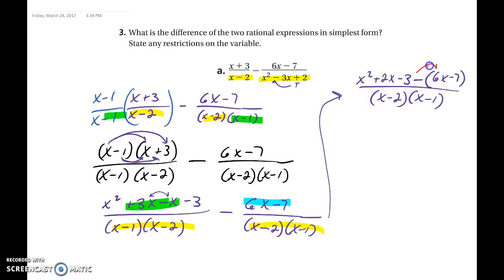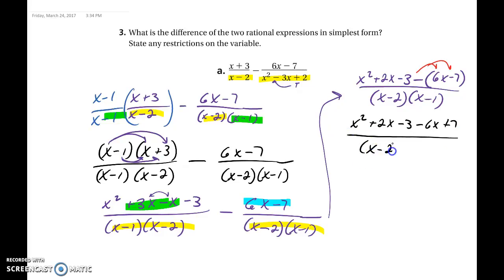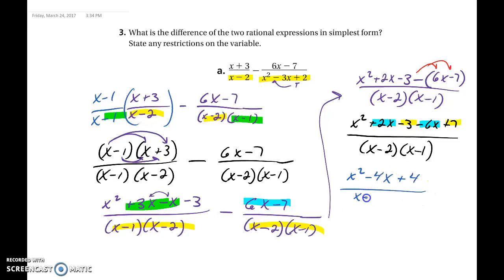We distribute the negative sign in, so it becomes x squared plus 2x minus 3 minus 6x plus 7, all over x minus 2 times x minus 1. We combine 7 and negative 3, and 2x and negative 6x, giving us x squared minus 4x plus 4 over x minus 2 times x minus 1.